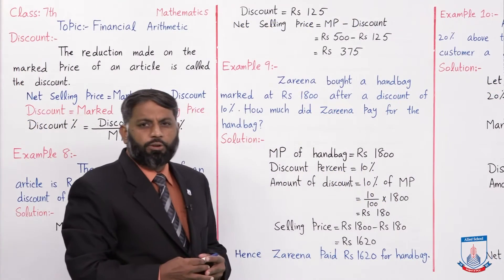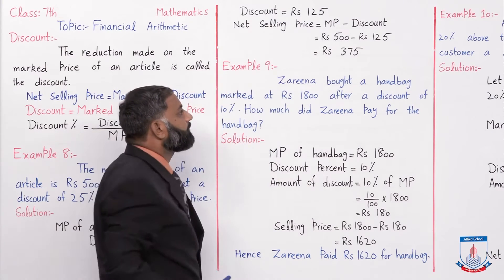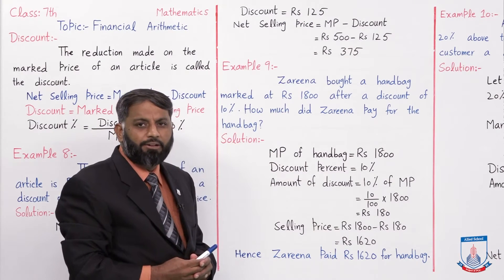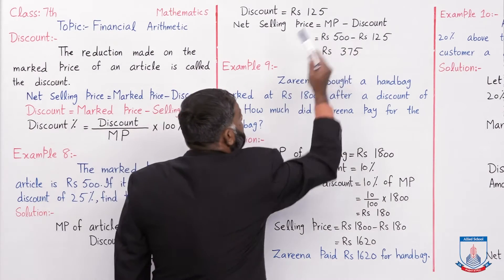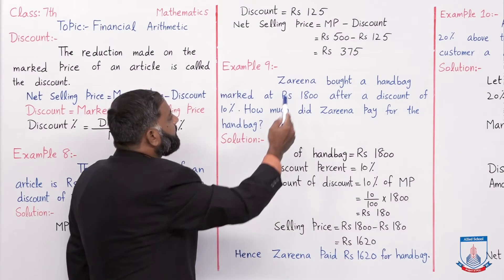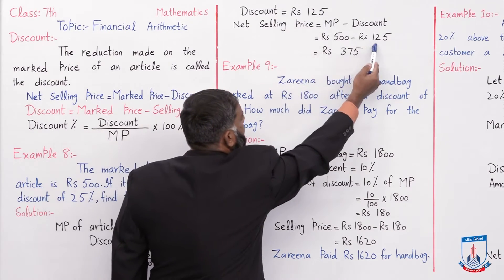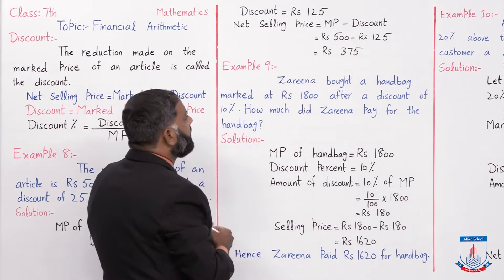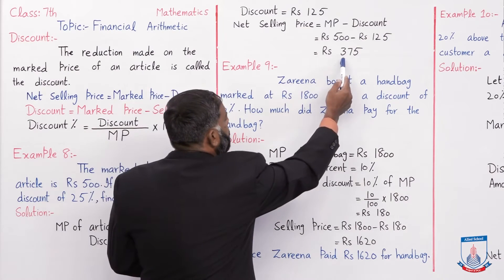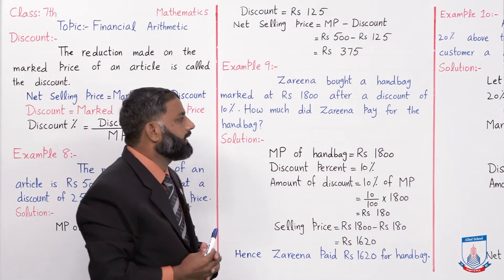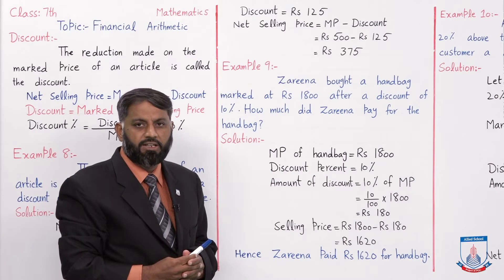Discount find हो गया = Rs. 125۔ Net Selling Price = Marked Price − Discount = 500 − 125 = Rs. 375۔ تو net selling price Rs. 375 آئی — یہی ہمیں اس question میں find کرنی تھی۔